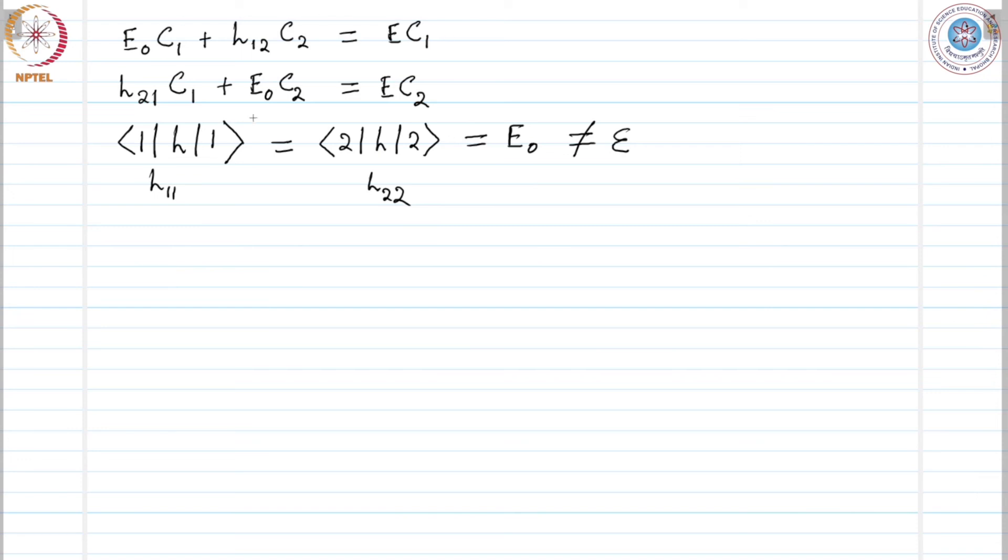These equations may be represented in matrix form, and to determine the non-trivial solution for C1 and C2, we will need the secular determinant to be zero. We will require E naught minus E, H12, H21, E naught minus E, the determinant equals zero.